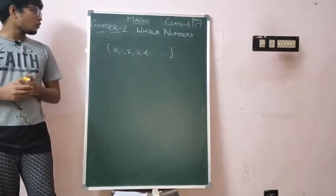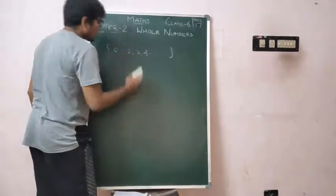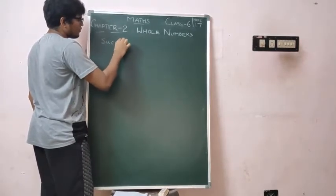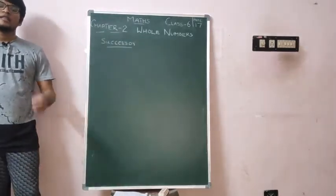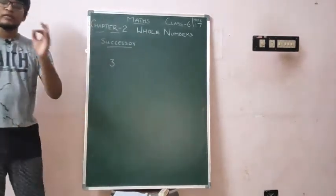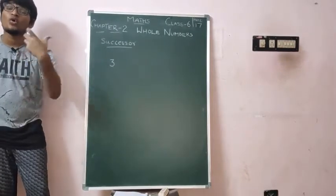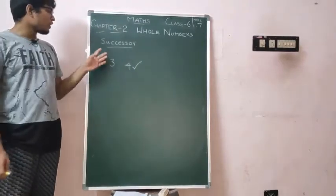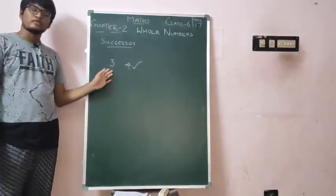Did you understand this? Now, when we talk about whole numbers, we need to talk about a new important topic called successor and predecessor. What is successor? The number which comes after the given number. For example, find the successor of 3. The number that comes after 3 is 4. So the successor of 3 is 4.